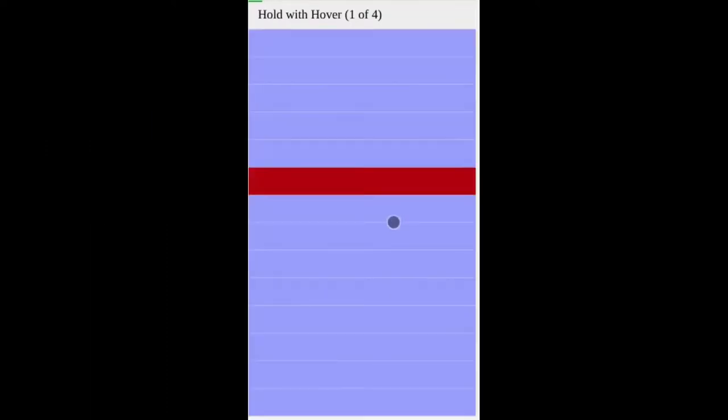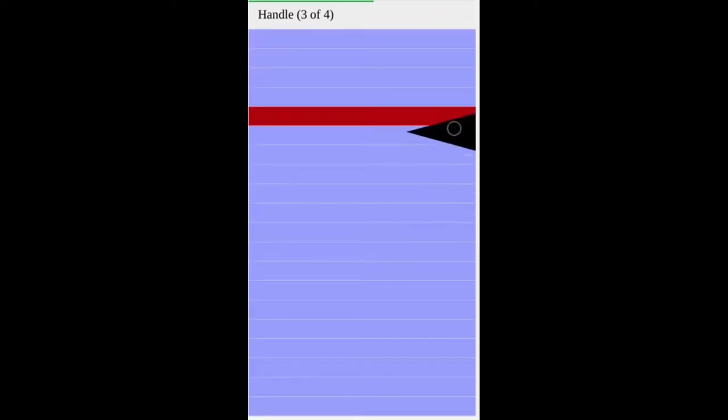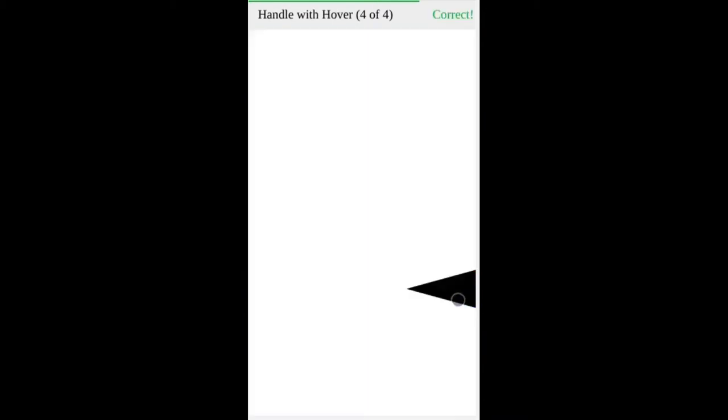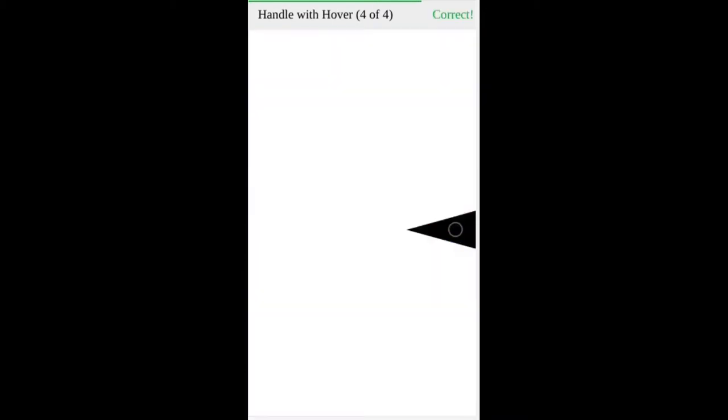For the task, we asked participants to select a target item, highlighted in red, from a vertical list of items. This is similar to common mobile selection tasks such as navigating a vertical timeline in Google Photos. When users selected correctly, we displayed more items for the next task, making it harder to select correctly. When users selected incorrectly, fewer items were displayed.